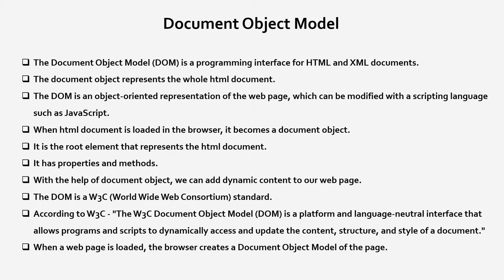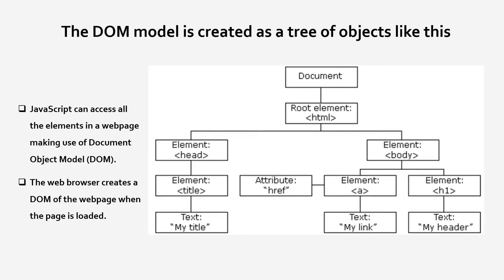Whenever a web page is loaded, the browser creates a Document Object Model of the page. The DOM is created as a tree of objects — a hierarchical tree structure. From the root we have a header and body part. In the header part we have a title tag with title text. In the body part we have different tags such as anchor tag, heading tag, and text content.